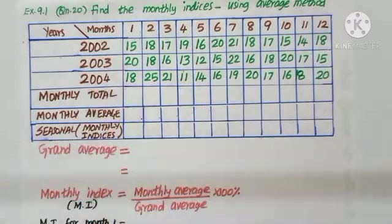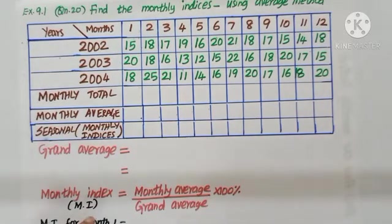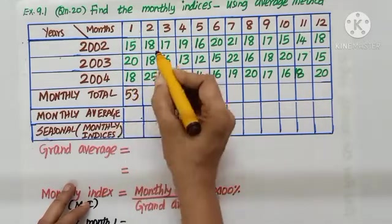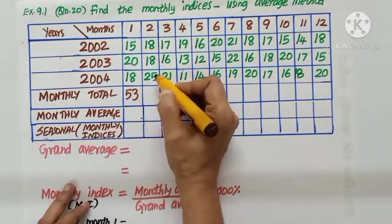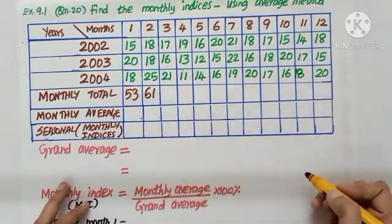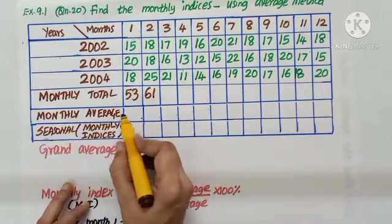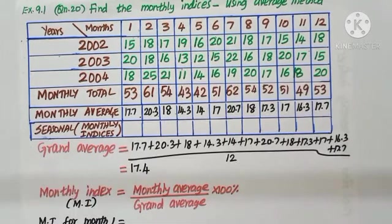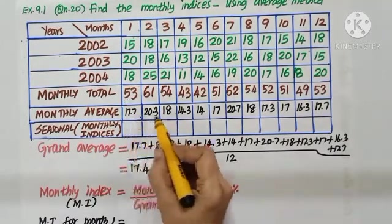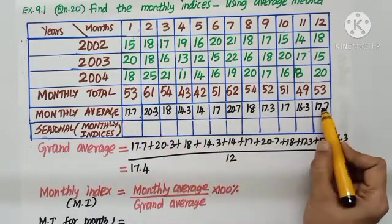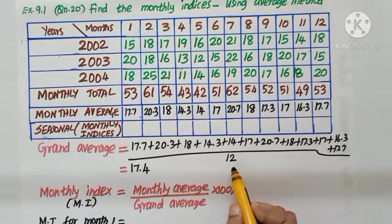So, add all the values. What is your answer? 15 plus 20 plus 18, 53. 18 plus 18 plus 25, 61. Like this, find the total of each. Each value divide by 3. You get monthly average. As we divide and get the averages to find grand average. Add it all. Divide by 12. We get 17.4.